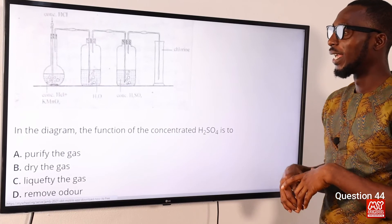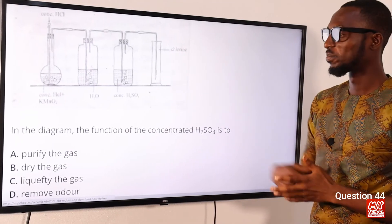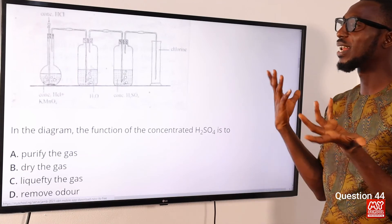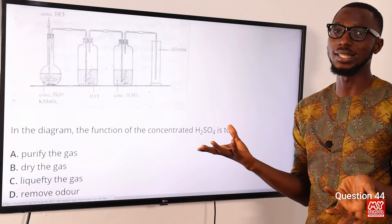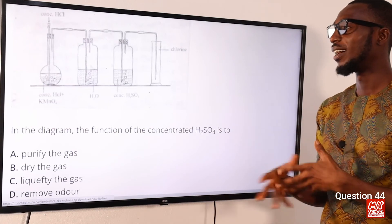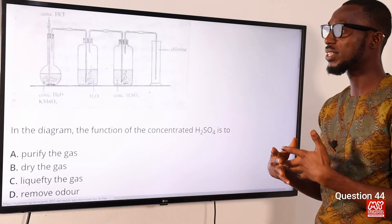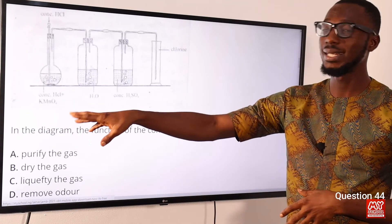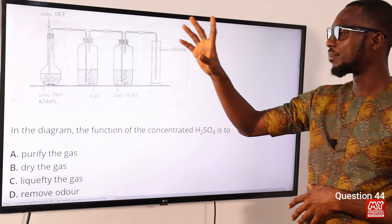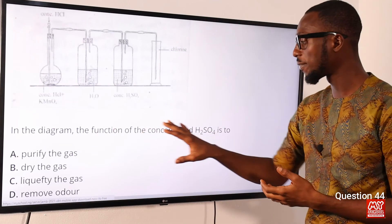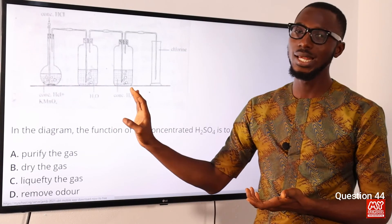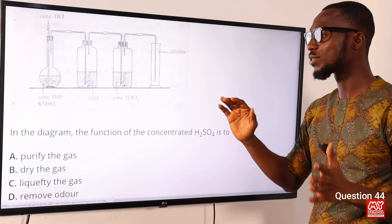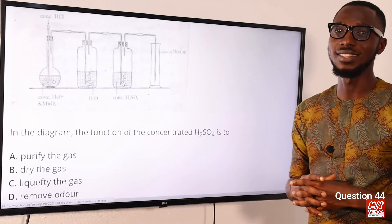Question 44: In the diagram above, the function of the concentrated H2SO4 is to do what? This is the laboratory preparation of chlorine gas from the oxidation of concentrated H2SO4 with potassium permanganate (KMnO4). The function of the concentrated H2SO4 is to dry the chlorine gas. The correct option is option B: to dry the gas.